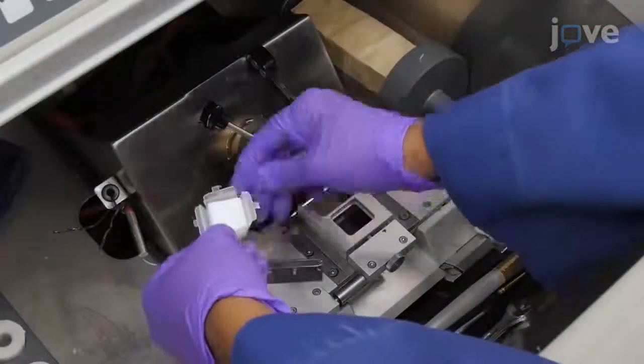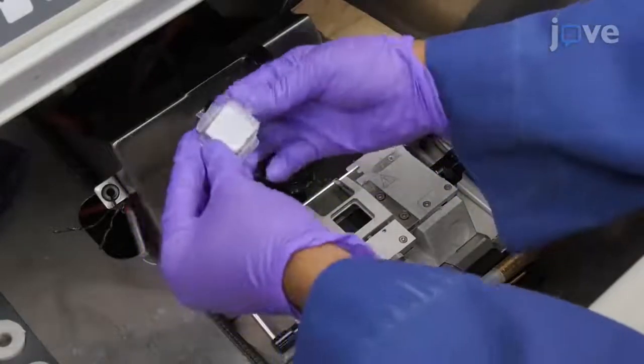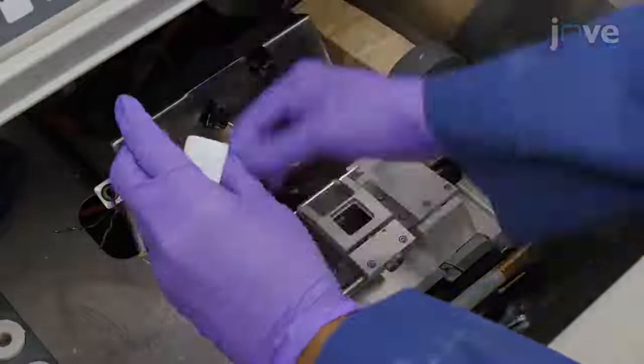To expose the OCT block containing the brain, use a razor blade to cut the 4 edges of the mold all the way to the bottom and then peel away the embedding mold from it.